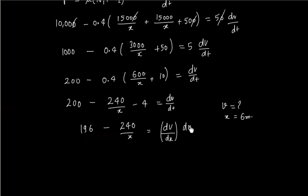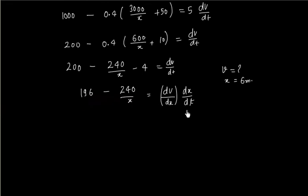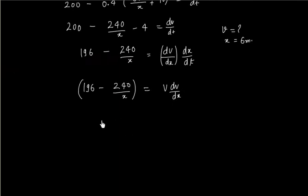We can change the variable because we have time. So let us put dv by dx into dx by dt. So we can multiply by dx in numerator as well as denominator both. Now dx by dt is v. This is v dv by dx.